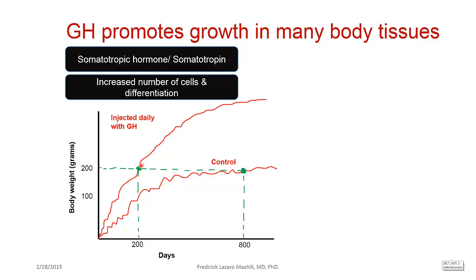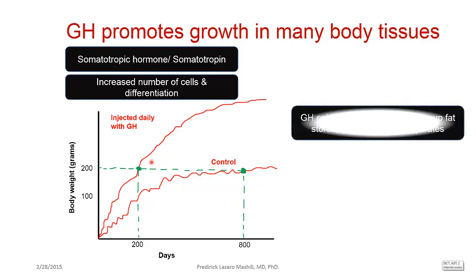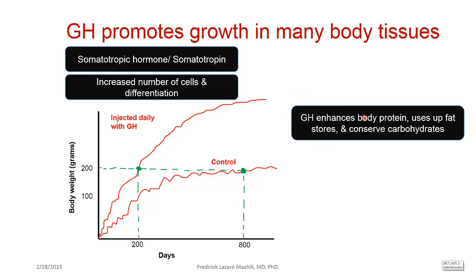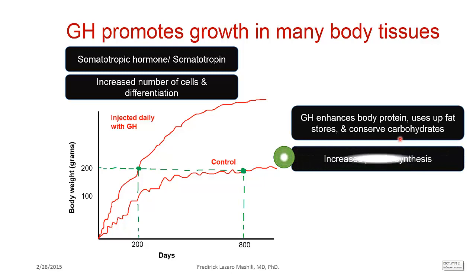You can clearly see the effect of growth hormone in weight gain — more weight gain with growth hormone, less without it. Growth hormone essentially enhances body protein, uses up fat stores, and conserves carbohydrates. For protein, you build it up; for fat, you burn it; and for carbohydrates, you conserve them — you don't use them up. These are the three main metabolic effects of growth hormone.